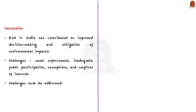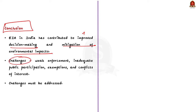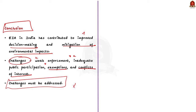With this, we have completed the main body of the answer. For the conclusion, you can write: while EIA in India has contributed to improved decision-making and mitigation of environmental impacts, several challenges still persist — including weak enforcement, inadequate public participation, exceptions, and conflict of interest. Addressing these limitations is crucial for enhancing the effectiveness and credibility of the EIA process, which effectively ensures and promotes sustainable development. In this discussion, we saw about environmental impact assessment, which is one of the important topics for the mains examination.